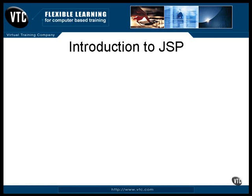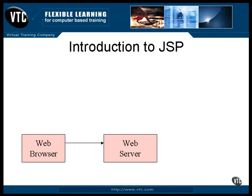It works like this. A web browser uses its normal HTTP protocol to issue a request in the form of a URL. This request arrives at the server. The web server recognizes this particular URL and passes it on to the JSP server. The JSP server may be a part of the web server, or it could be an entirely separate process.